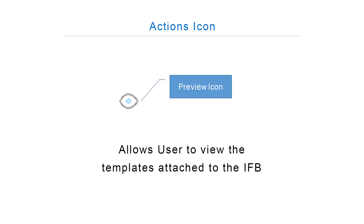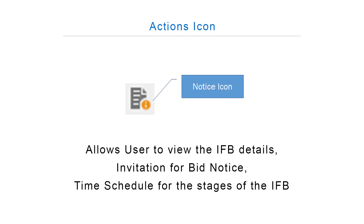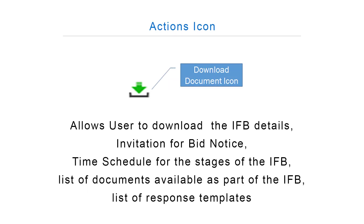The Preview icon allows the user to view the templates attached to the IFB. The Notice icon allows the user to view the IFB details, invitation for bid notice, and time schedule for the stages of the IFB. The Download Document icon allows the user to download the IFB details, invitation for bid notice, time schedule for the stages of the IFB, and the list of documents available as part of the IFB.